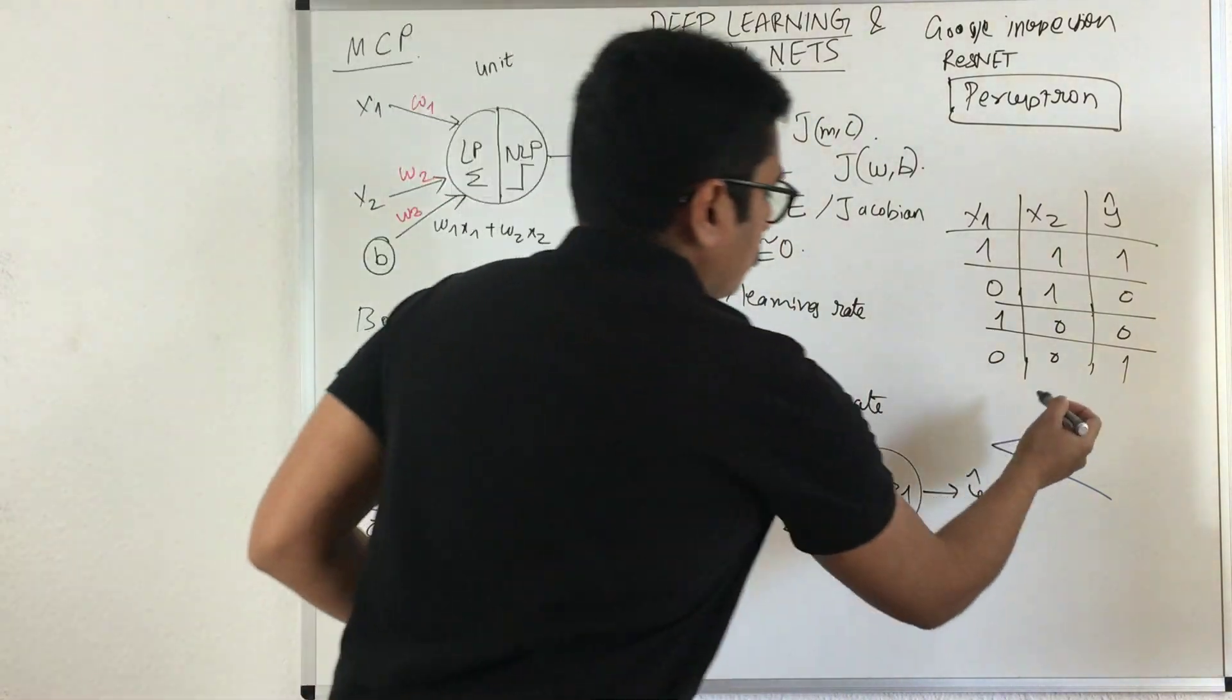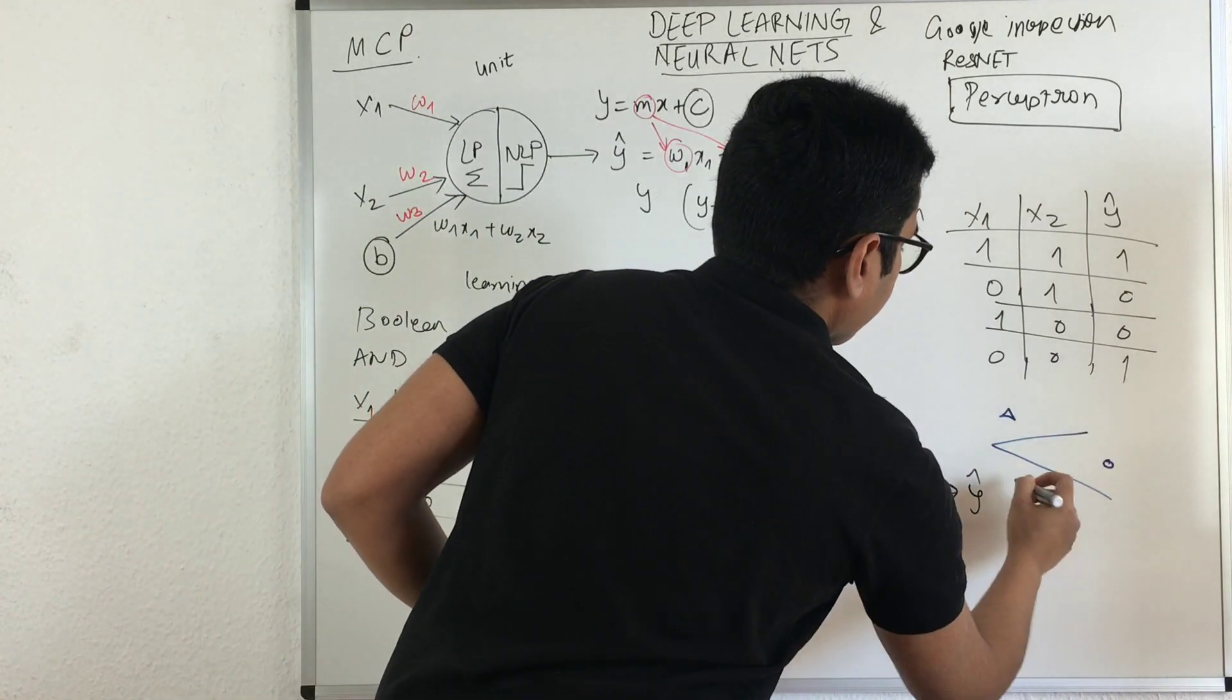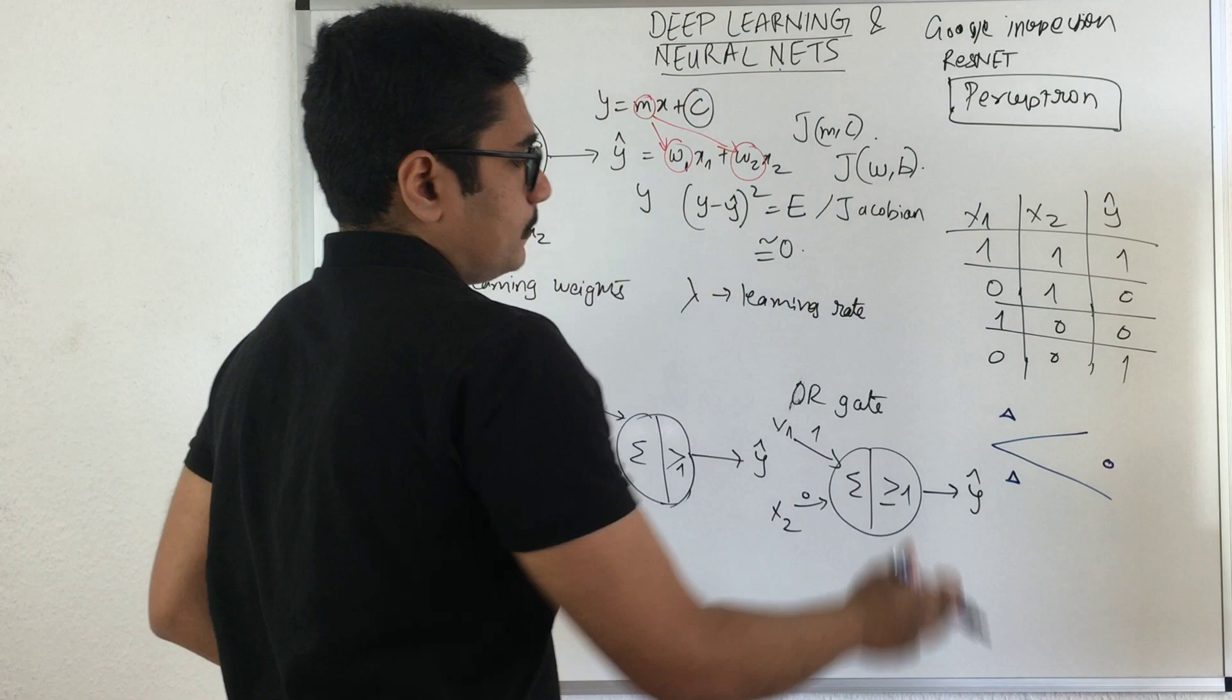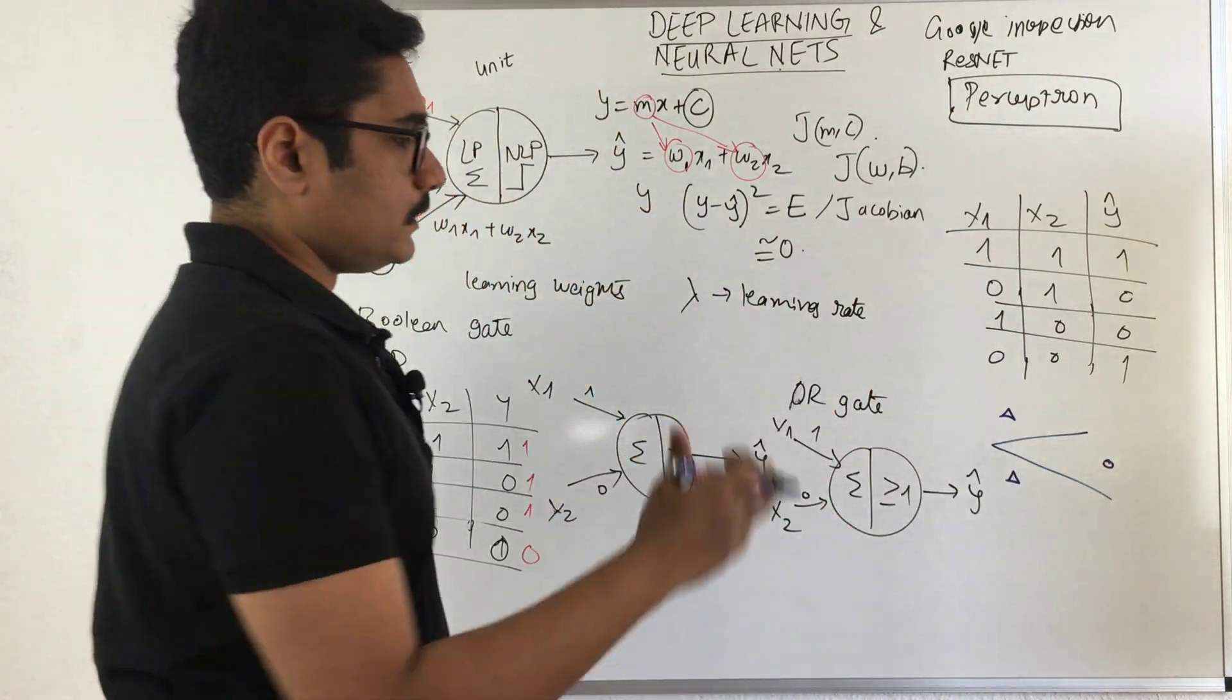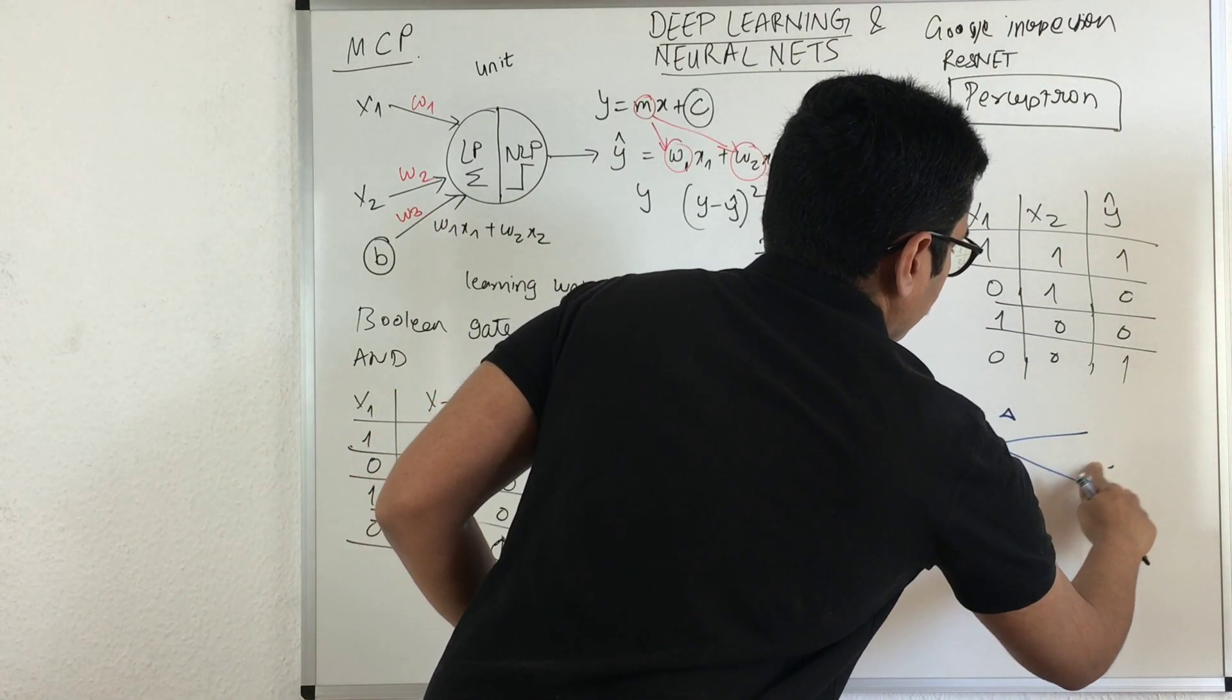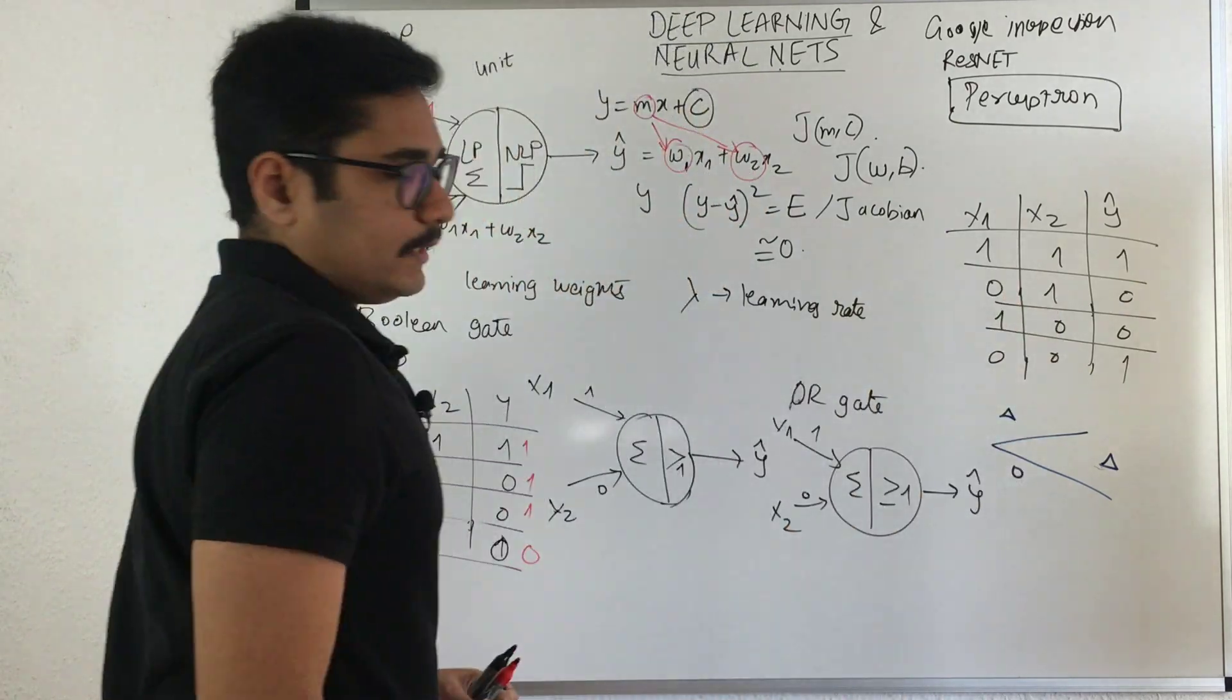Say you have two planes and two classes. For positive I'm considering a triangle and for zero I'm considering a circle. Now you cannot differentiate these with a linearly separable line. There cannot be a hyperplane that is possible to separate these instances. You cannot separate this by drawing a linear line.